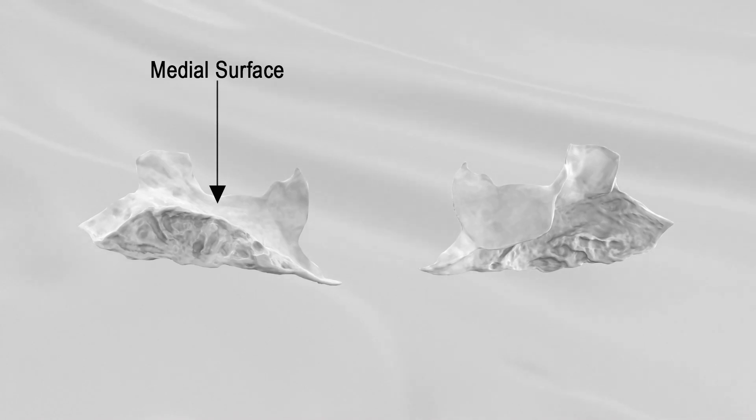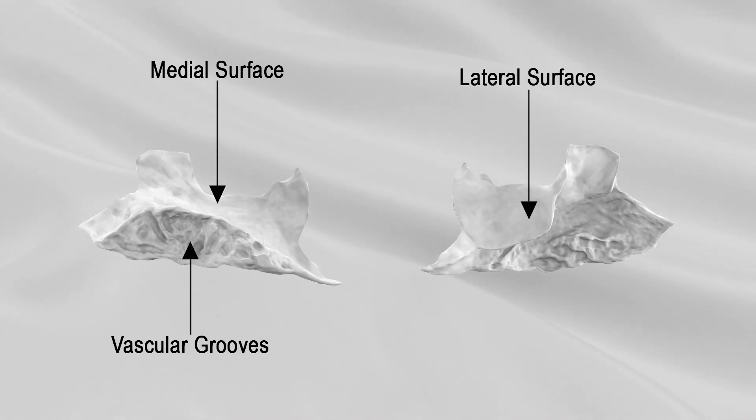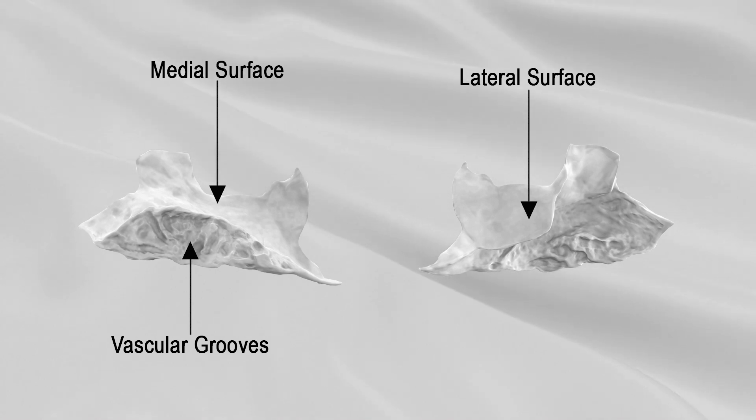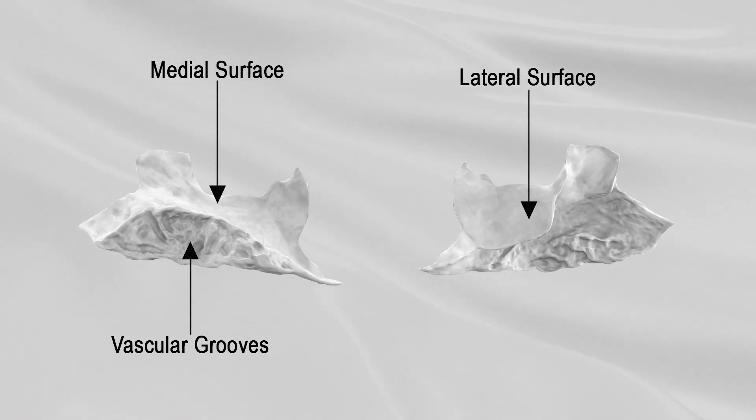The medial convex surface is marked by vascular grooves. The lateral concave surface forms part of the inferior meatus of the nose.